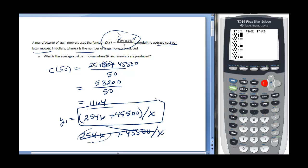To do that on my calculator, I'm going to put parentheses, and then put parentheses, 254X plus 45,500, divided by X.